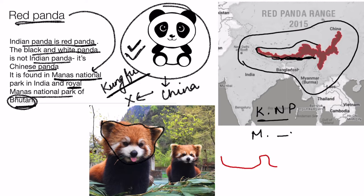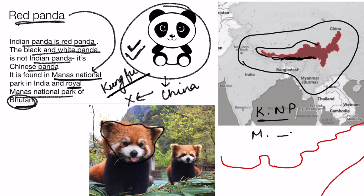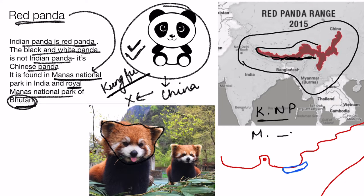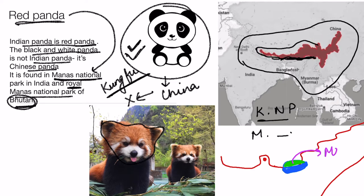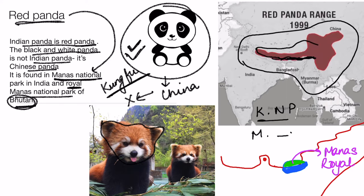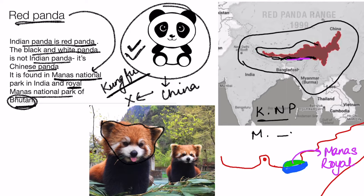This is Nepal, this is Sikkim, this is Bhutan, and then Arunachal Pradesh. Kanchenjunga National Park is here, and Manas Wildlife Sanctuary and National Park is here. The part of Manas that lies in Bhutan is called Royal Manas National Park. The red panda can be seen in Royal Manas National Park, Manas National Park, Kaziranga, and a little in Myanmar and China as well.